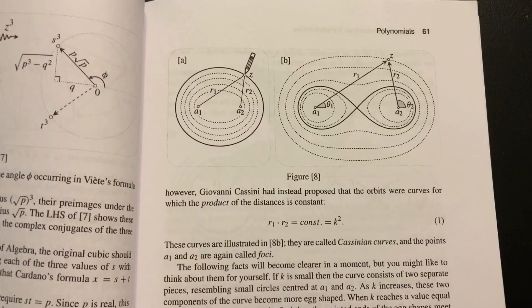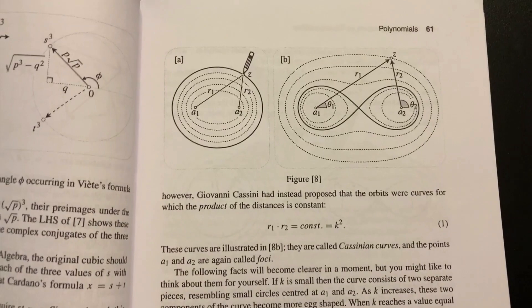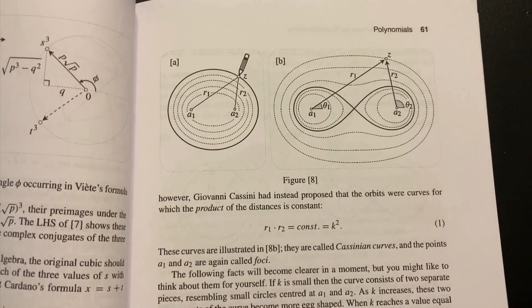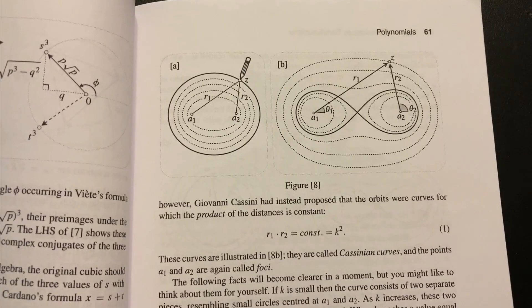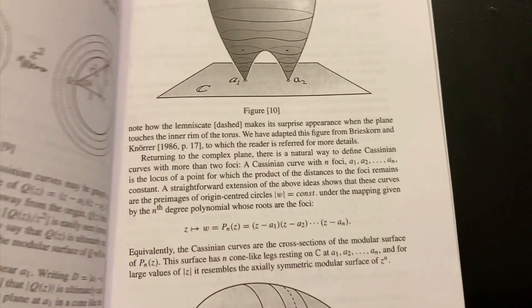Further on in the book, we get an application of complex functions to studying what are called Cassinian curves, which are analogs of ellipses. Whereas with ellipses, you keep the sum of two distances constant. With Cassinian curves, you keep the product of two distances constant. This happens to be related to level curves of absolute values of quadratic functions.